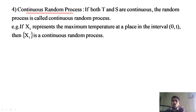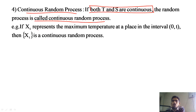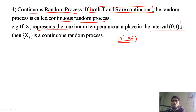Type 4: Continuous random process — if both T and S are continuous. For example, x(t) represents the maximum temperature at a place in the interval [0, t]. Temperature is continuous, and the time interval is also continuous. So this is called a continuous random process. These are the four types of random processes.